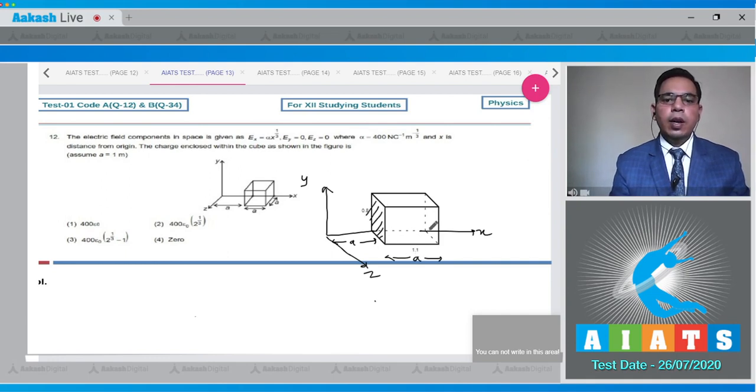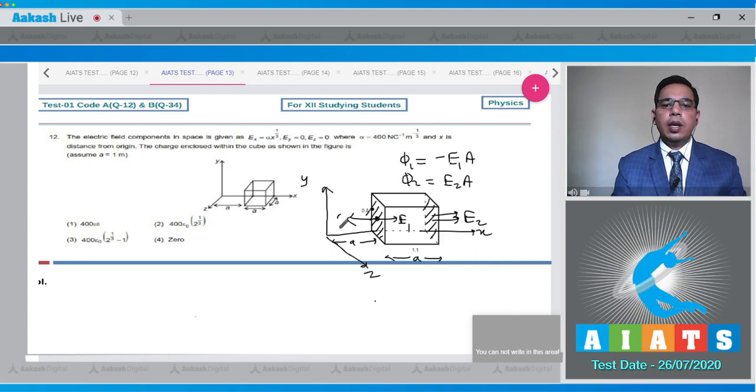What will the electric field be here at this space and at this space? Let at this space this is e_2 and at this space this is e_1. We can see that area vector is opposite to the electric field at surface 1 and in the same direction at surface 2. Then phi_1 will be equal to minus e_1 into area. Phi_2 will be equal to e_2 into area. Because here area vector and electric field vector are in opposite direction but here they are in the same direction. What will be the phi net? Phi net will be equal to phi_1 plus phi_2.